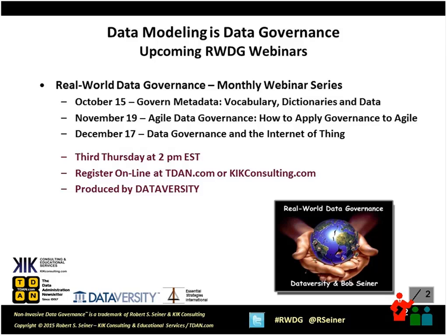Before I get started, I want to offer a reminder of the upcoming episodes of the Real World Data Governance Series. In October, we'll be talking about governing metadata, vocabularies, dictionaries, and data. In November, we're going to talk about agile data governance and how to apply governance to agile efforts. And in December, we're going to be talking about data governance and the Internet of Things — another hot topic around interconnectivity between devices, people, and the Internet.